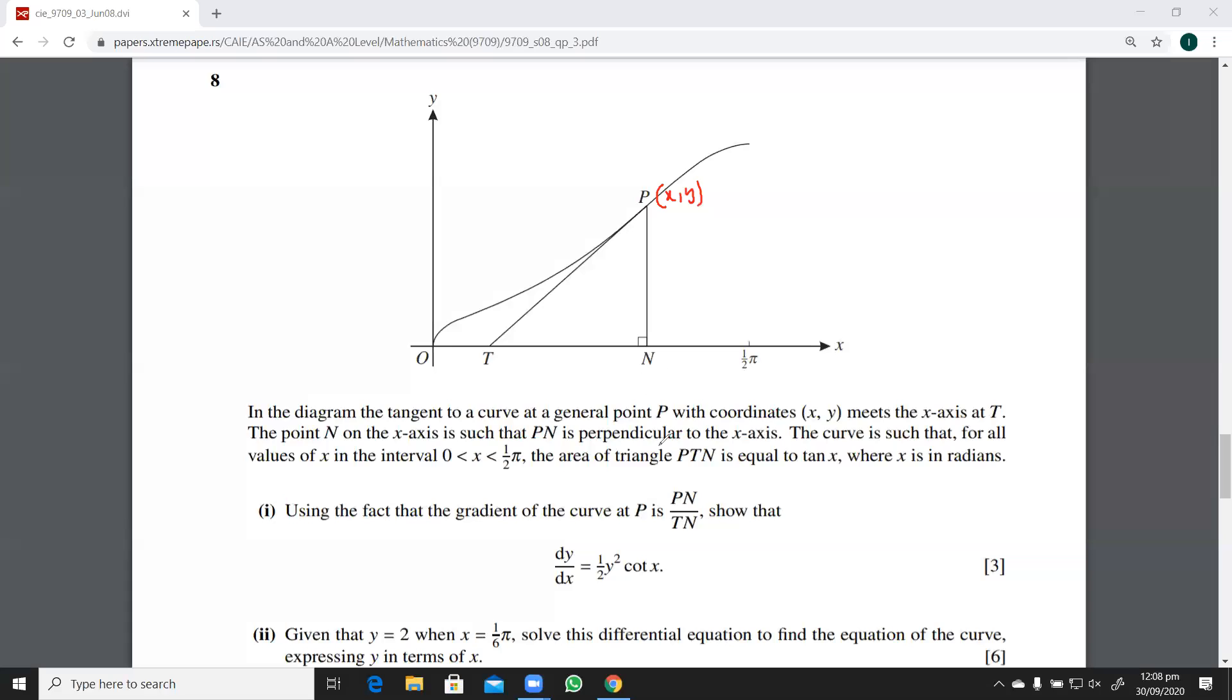When you write this, you can see P, T, and N being used. The area of the triangle is also discussed, so can I say that this length PN is going to be y? Yes, so this length PN is y. The curve is such that area of the triangle PTN is equal to tan x, so can I say that half into PN into TN, that is equal to tan x. This is the given information that area of the triangle PTN is half into base into height, that is equal to tan x.